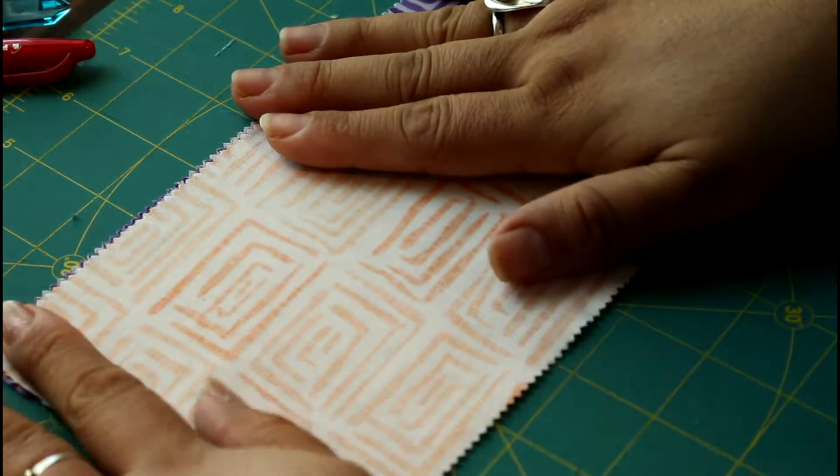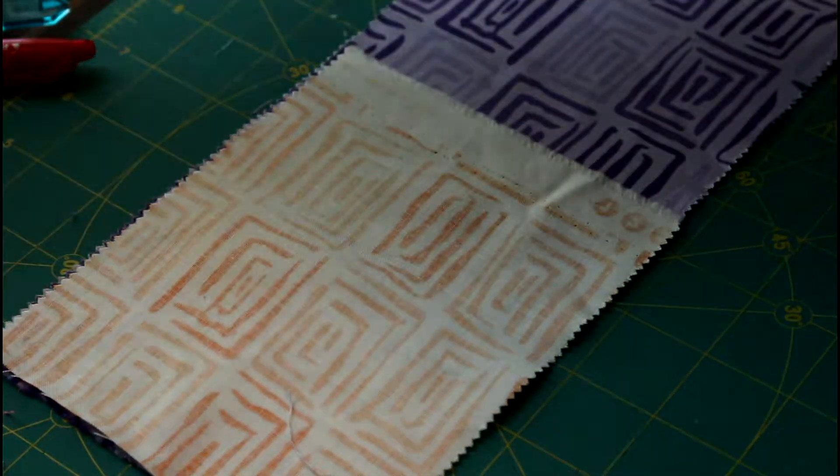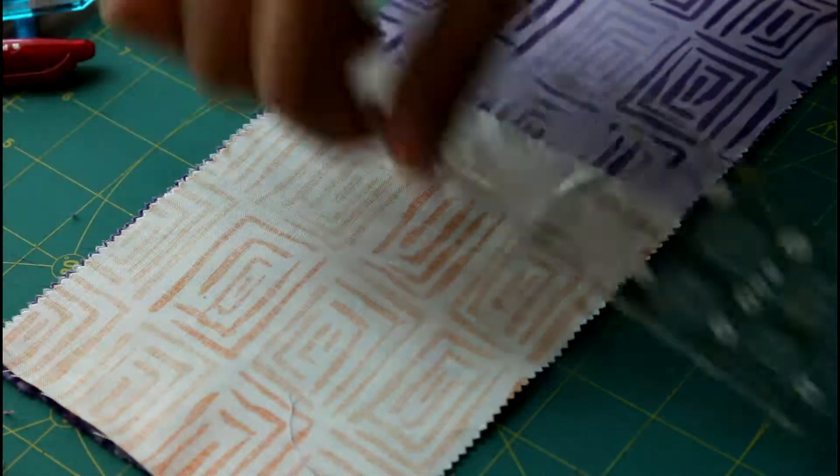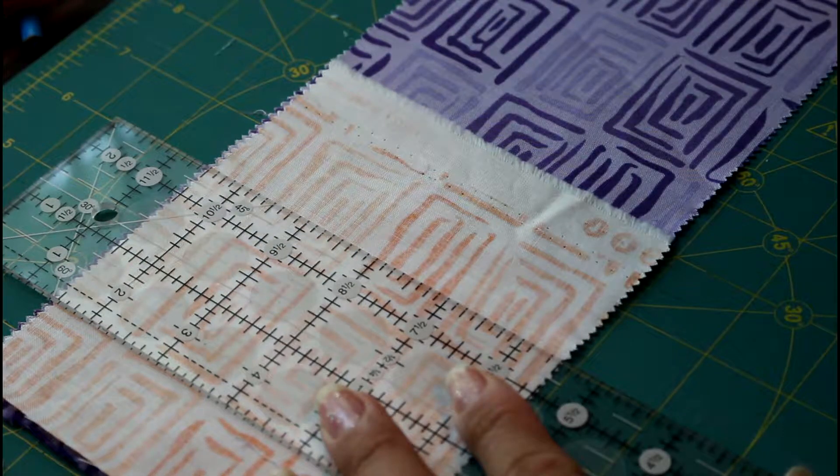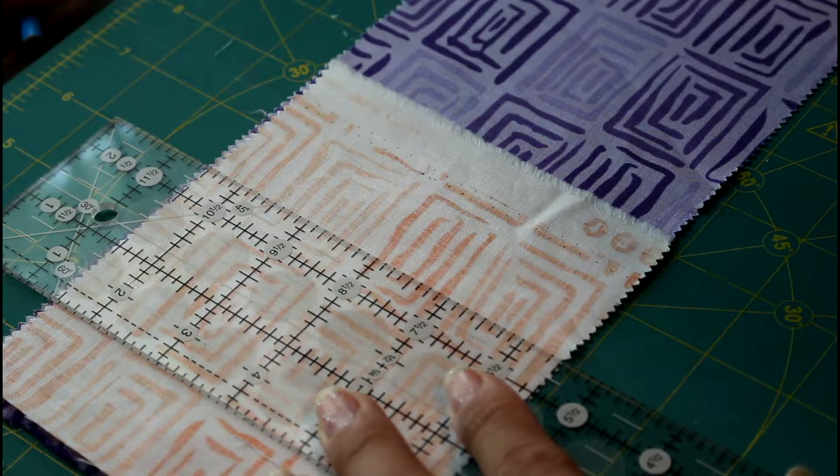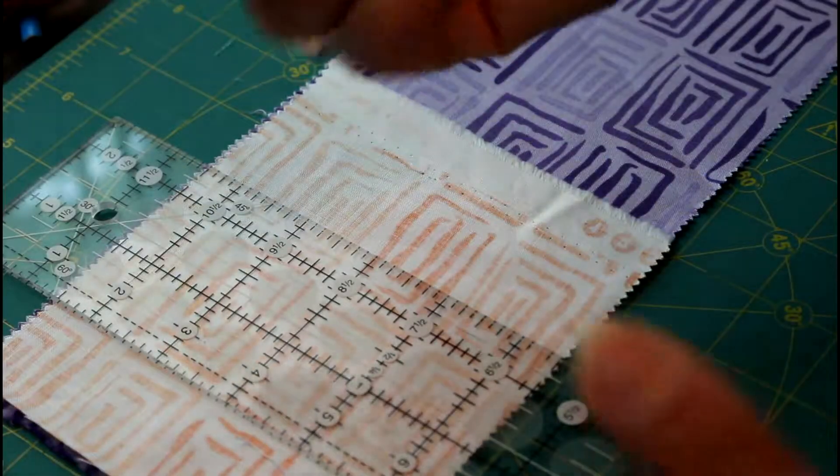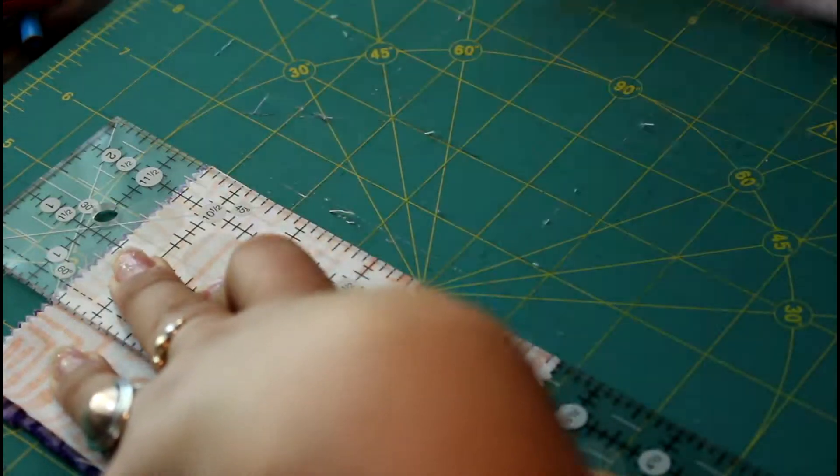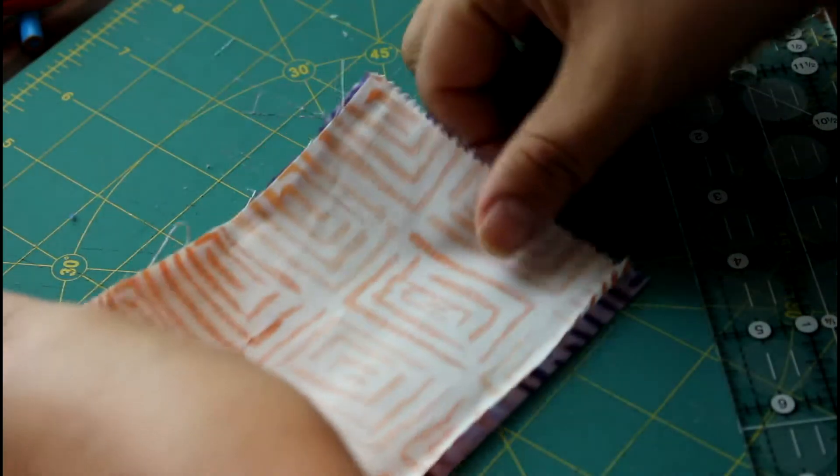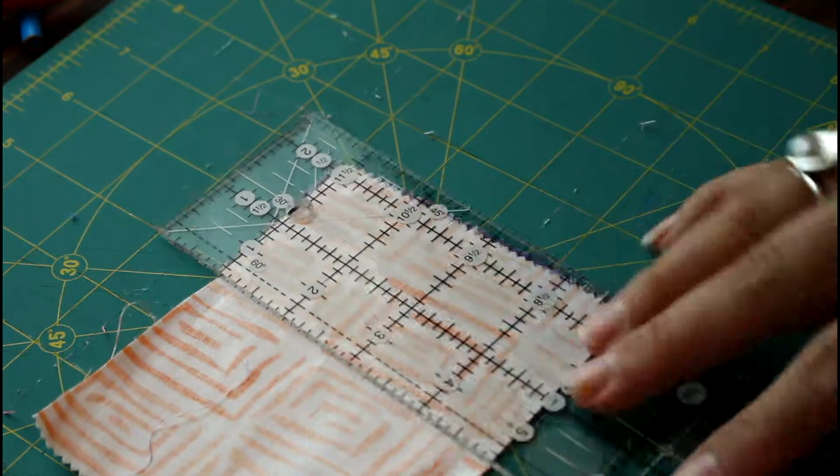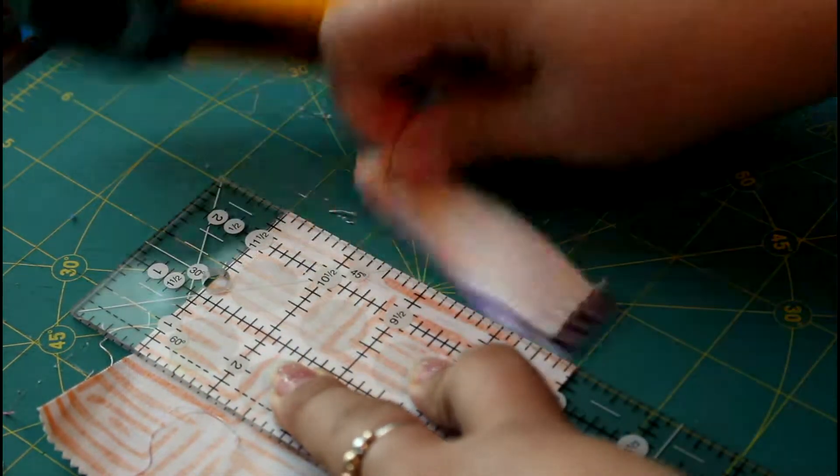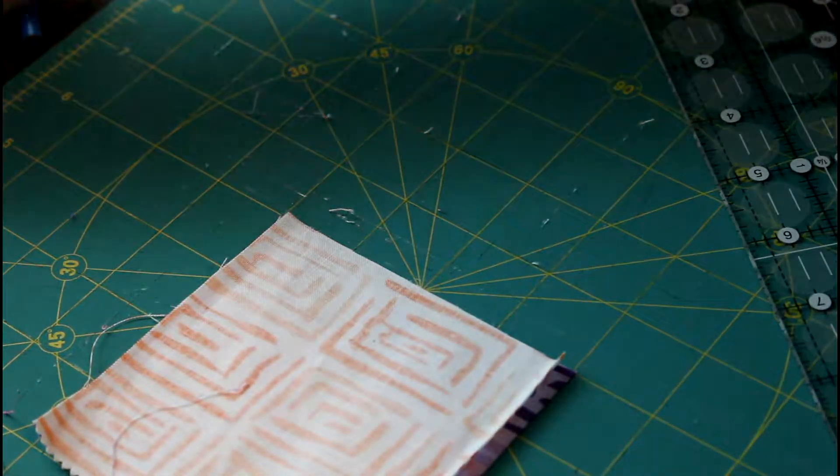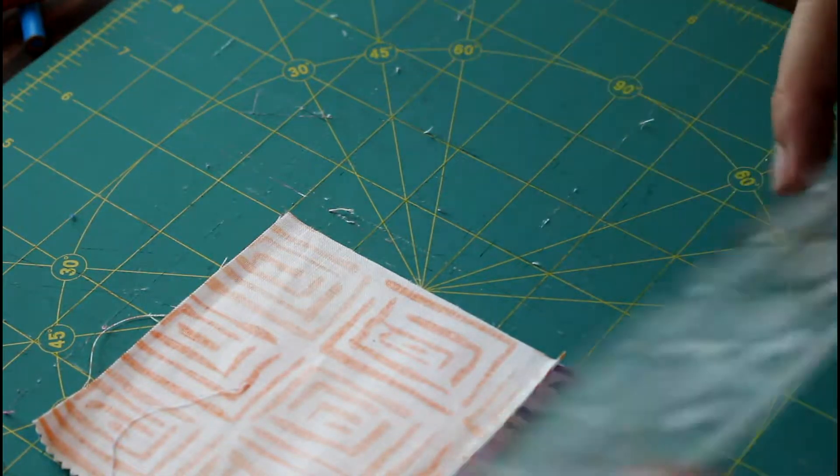I want three inch half square triangles, so what I'm going to do is cut my fabric four inches square. The reason they say you can do three and a half or three and seven eighths, but I really don't like messing with fractions and I don't mind using that extra fabric. So I'm going to go ahead and cut my fabric and make sure that I have a four inch square.